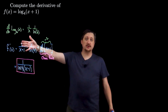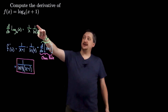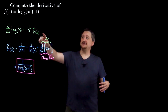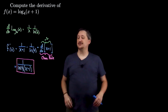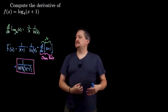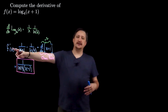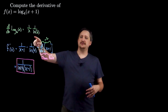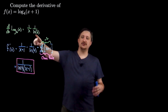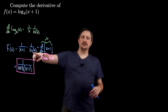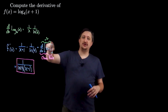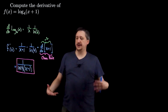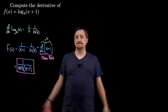So again, taking a derivative of any kind of log — natural log or other — it's just 1 over x times 1 over natural log of that base. For a natural log, that ends up being 1 and goes away, which is why natural logs are nicer, but it still works — same formula. So f prime gives me 1 over x plus 1 times 1 over natural log of 4. The chain rule gives just 1, so putting these together I get 1 over natural log of 4 times x plus 1.